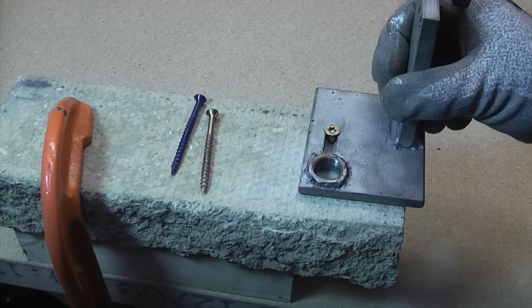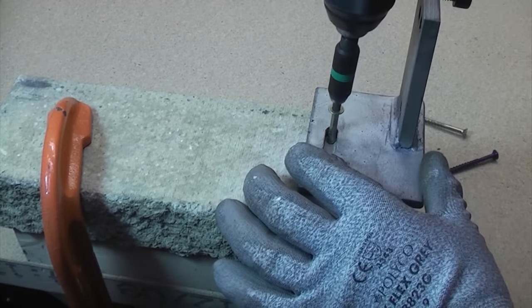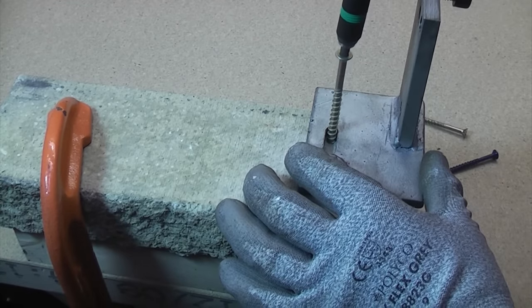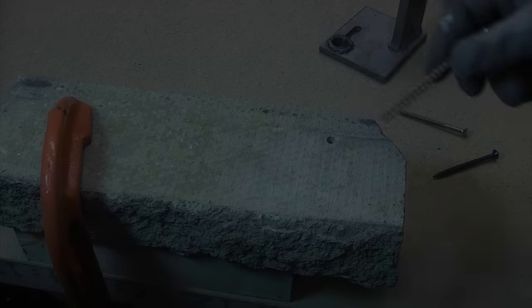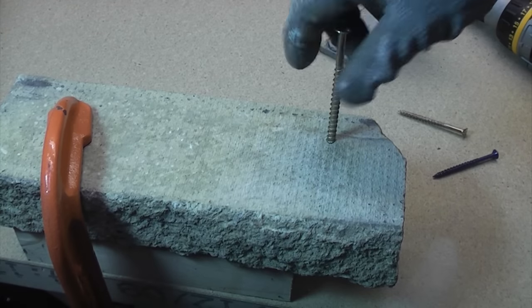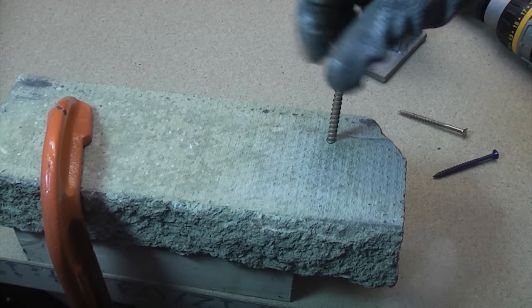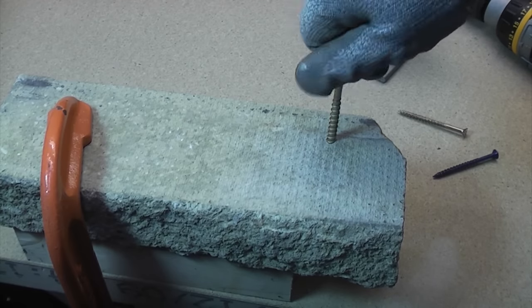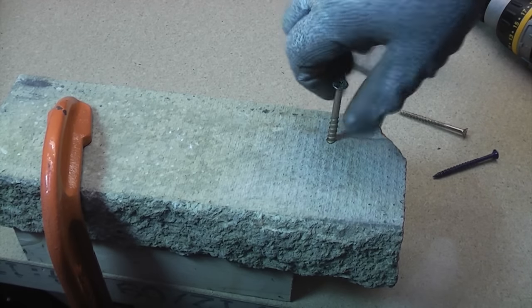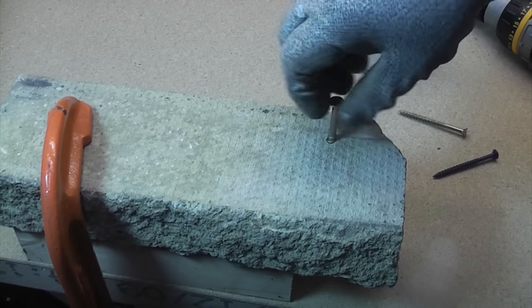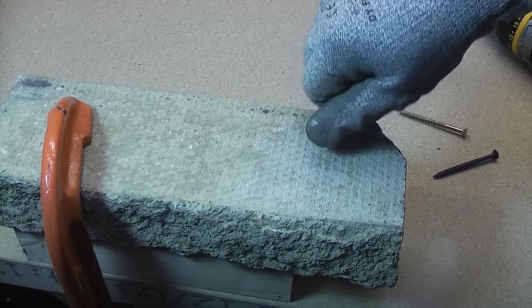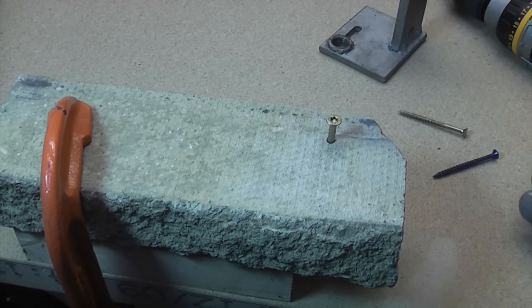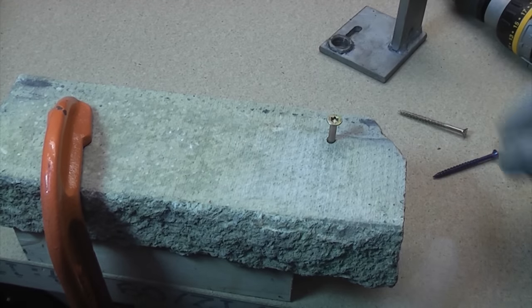And as you can see, we've got an extremely good fixing there. Once we've removed it, you can easily screw it back in using your fingers because the first time around it actually cuts a thread into the concrete. So they are an extremely useful way of fixing to masonry.